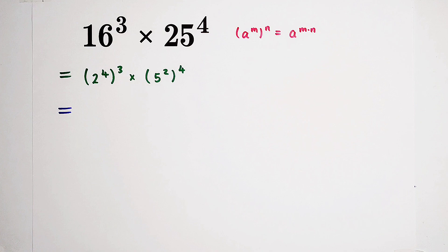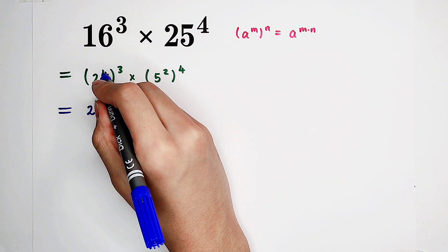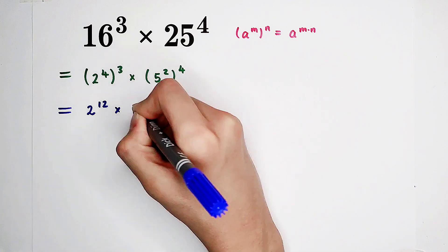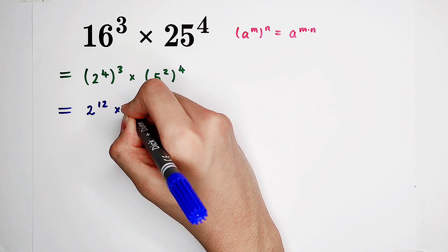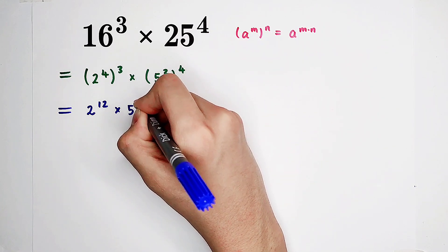Now, that means 2 to the power of 4, then to the power of 3, equals 2 to the power of 4 times 3, which is 12. Then times the same rule for 5. 5 to the power of 4 times 2, it is 8.